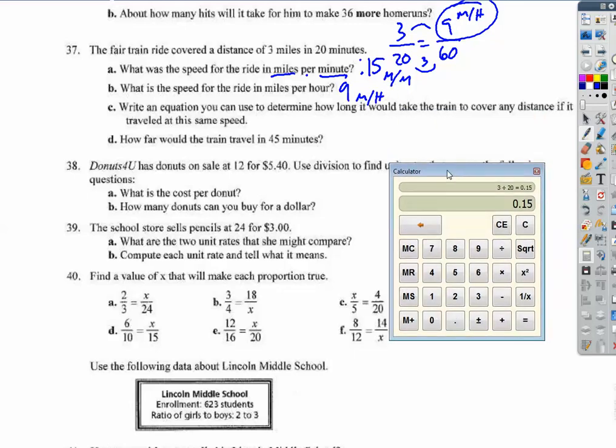Write an equation that you could use to determine how long it would take the train to cover any distance if it traveled at the same speed. Well, we know that rate times time equals distance. So my rate is 9 miles an hour. And my time, we don't know my time, is equal to distance. You could also have one for the distance in minutes, or time in minutes. So you could say 0.15t is equal to d. So this one is in hours. And this one is using minutes for time. Now, for this one, since we're given minutes, I'm going to use this equation here. So 0.15 times 45. So we get 6.75 miles.